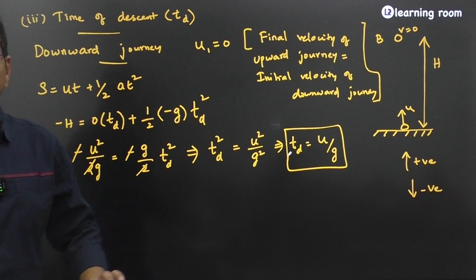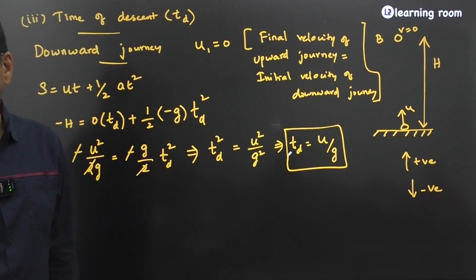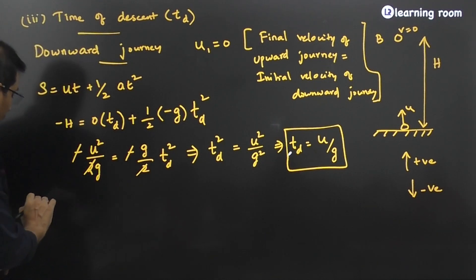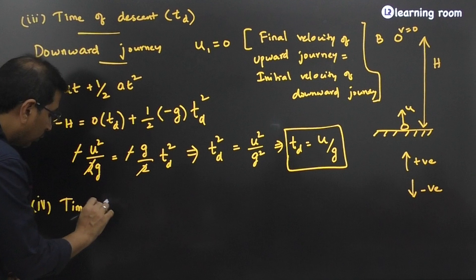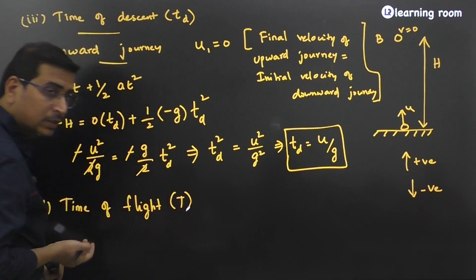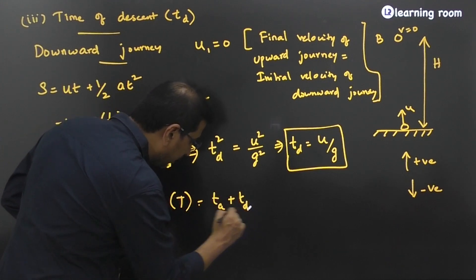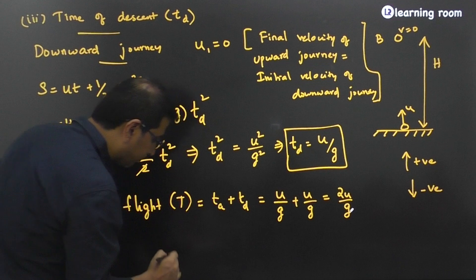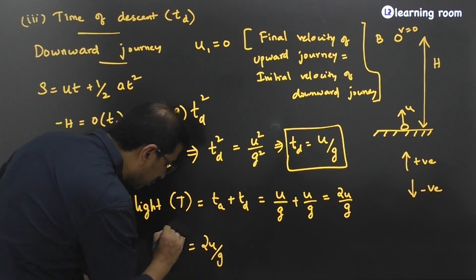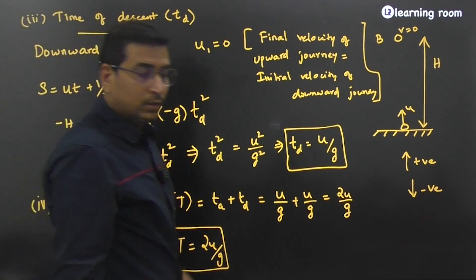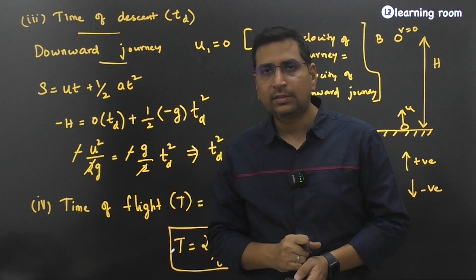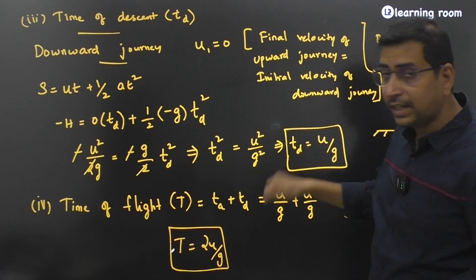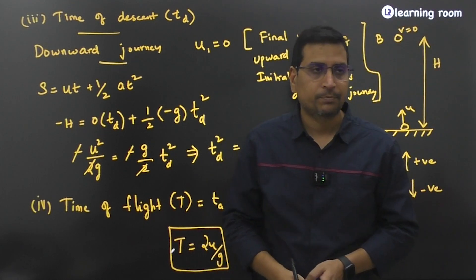The time of flight equals Ta plus Td, which is u/g + u/g = 2u/g. To quickly summarize all four expressions: maximum height H = u²/2g; time of ascent Ta = u/g; time of descent Td = u/g; and total time of flight T = 2u/g. Remember these expressions.